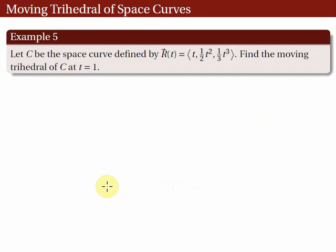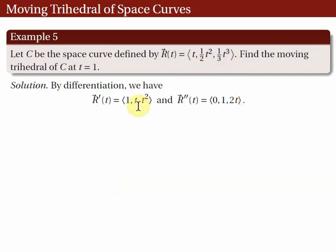Consider example 5. Let c be the space curve defined by r(t) = ⟨t, ½t², ⅓t³⟩. Find the moving trihedral of c at t = 1. To solve for T, N, and B, let's start by solving for the derivatives of r. So r'(t) = ⟨1, t, t²⟩ and r''(t) = ⟨0, 1, 2t⟩.